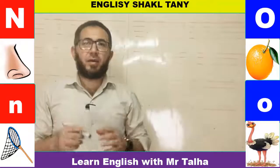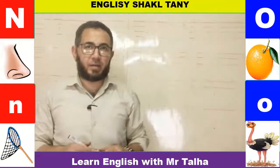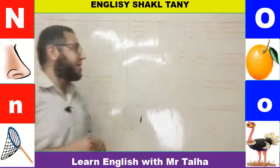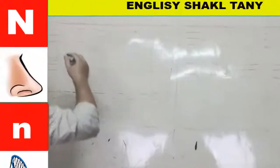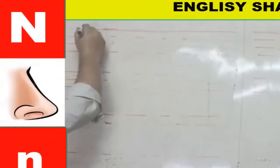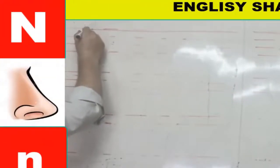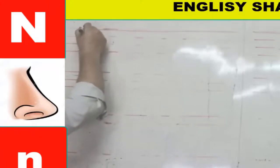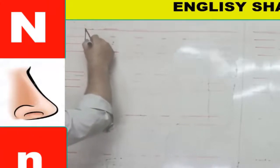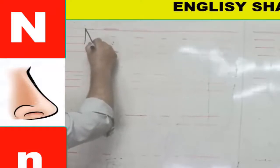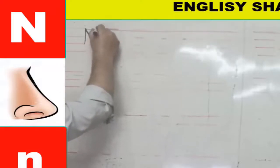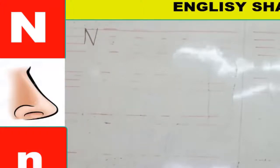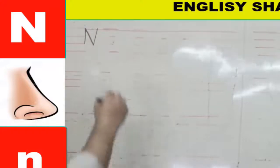Now let's see how to write the uppercase N and the lowercase n on the lines. For the uppercase N on four lines, I'll start at the first line, then go down to the third line, then from the top go with a diagonal line to the third line, then up to the first line again.